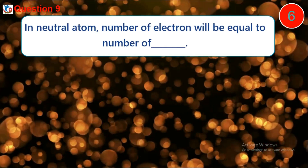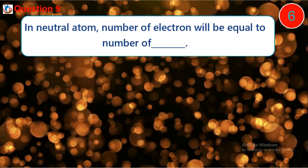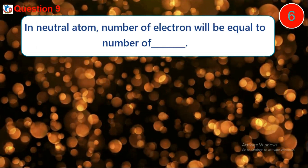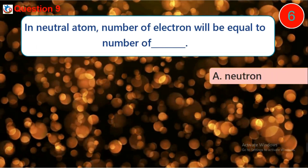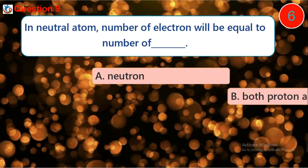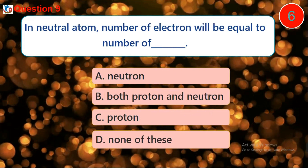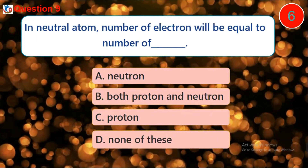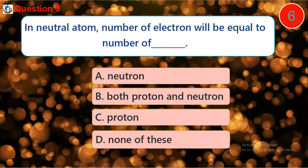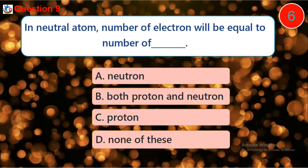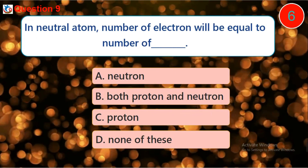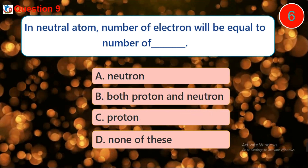Question nine: in a neutral atom, the number of electrons will be equal to the number of dash. A. neutron, B. both proton and neutron, C. proton, D. none of these.